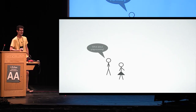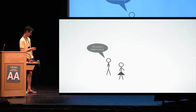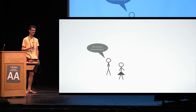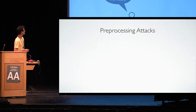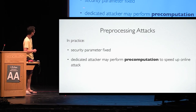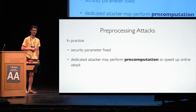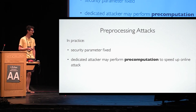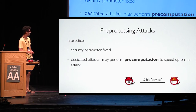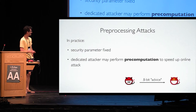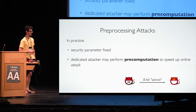After a while, Bob wakes up from his hangover and asks what happens with preprocessing attacks. In practice, often the security parameter is fixed, and a dedicated attacker may perform some precomputation to speed up its online attack. We can capture this by considering an unbounded first-stage attacker that does whatever it wants but gives S bits of advice to the main attacker, which then tries to break the primitive in question. This models non-uniformity.